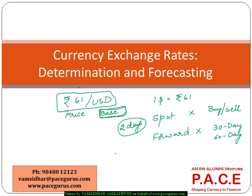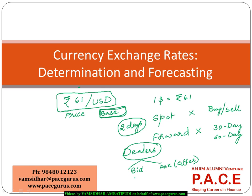In the currency exchange market, transactions generally happen through dealers — foreign exchange currency dealers. Dealers typically have two quotes: one called the bid rate and the other called the ask rate, also known as the offer rate. For example, for USD a dealer might have a bid rate of 59 rupees and an ask rate of 62 rupees per dollar.